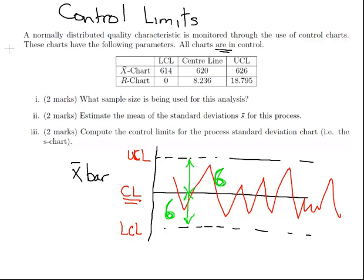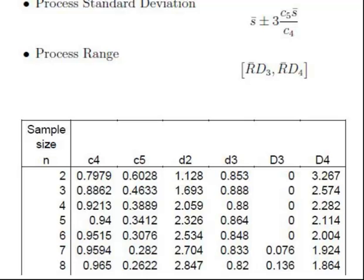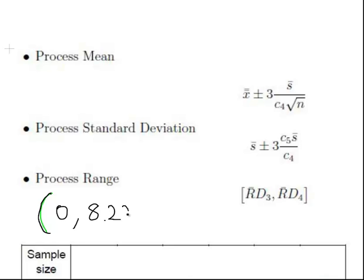The first question is what sample size is used for this analysis? We're going to see what formula we've got to work with. We're given some correction factors. Let me state the process range again: it is 0 and 18.795. R bar is 8.236.